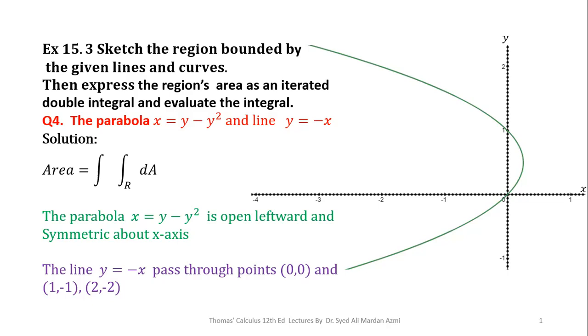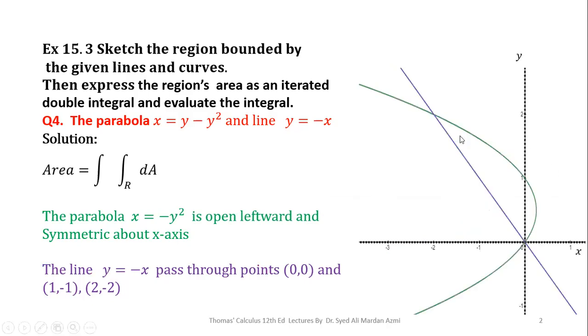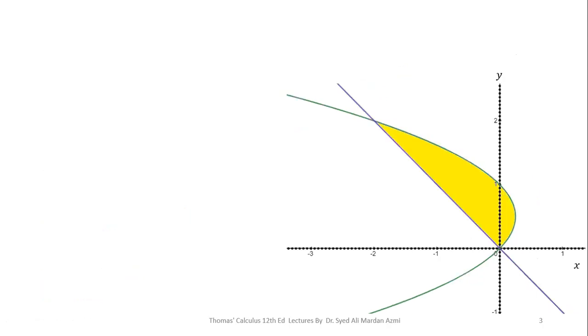So, after this, I have sketched the line y = -x which passes through the point (0,0). You can see when x = -1, y is 1, when x = -2, y is 2. So, after joining these points, I have extended the lines. So, this portion which is bounded between the parabola and straight line is our required region of integration.